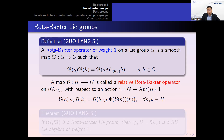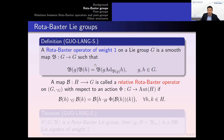Here is the definition. G is a group, and a Rota-Baxter operator of weight one on this group is a map B from G to G such that the following equation is satisfied: B(g) times B(h) equals B of g times Ad_{B(g)}(h). Here Ad denotes the adjoint action of the group G.